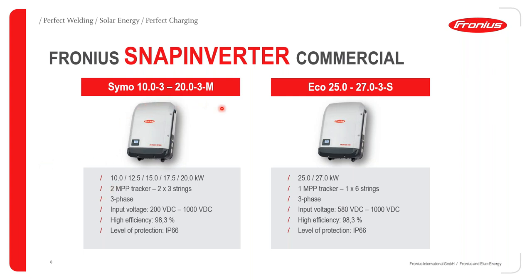Our commercial range starts with the Symo 10 to 20 kilowatts three-phase inverter, with two MPP trackers supporting three strings per tracker at 1000V DC, input voltage 200V to 1000V DC, efficiency 98.3%, and IP66 protection. The Fronius Eco comes in 25 or 27 kilowatt variants, three-phase, one MPP tracker with up to six strings, input voltage 580V to 1000V DC, efficiency 98.3%, IP66. All four inverters are compatible with our PV genset solution — easy, advanced, or professional.